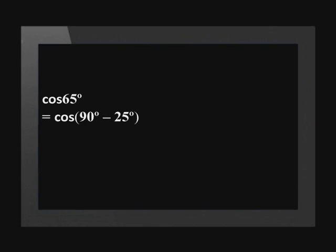Let's try the next one: cos(65°). This angle is in the first quadrant. Once again, we need to change both cos to sine and the angle to 25 degrees. Let's use co-functions. We can change this to cos(90° − 25°). This reduces to sine(25°), which is b.